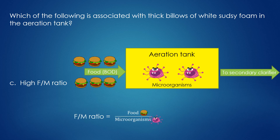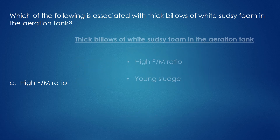If we were to calculate the FM ratio for this scenario, the quantity of food that goes into the top of this formula will be large, but the quantity of microorganisms that go into the bottom of this formula will be small. When you do the math, this leads to a high FM ratio, which is associated with thick billows of white sudsy foam in the aeration tank. Another characteristic of this condition is that the aeration tank has young sludge, meaning the microorganisms haven't spent a lot of time in the aeration tank. So remember, thick billows of white sudsy foam is associated with a high FM ratio and young sludge.